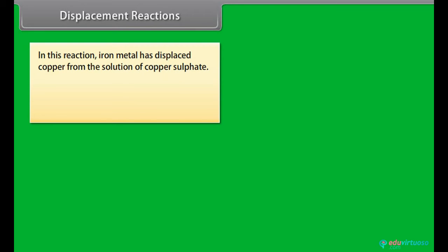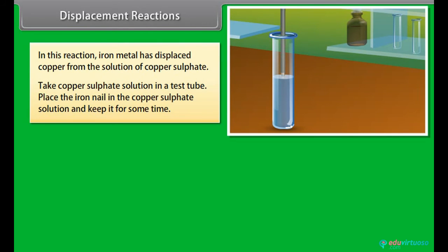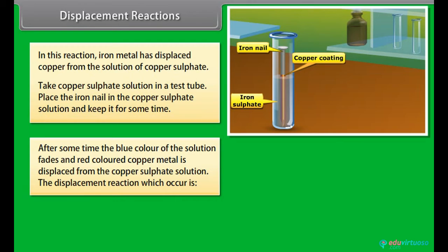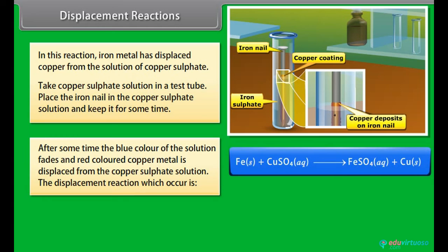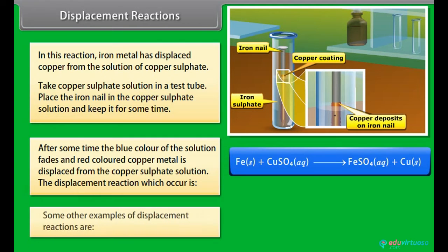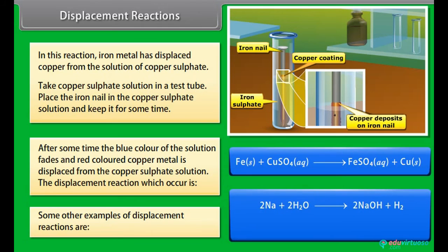In this reaction, iron metal has displaced copper from the solution of copper sulphate. Take copper sulphate solution in a test tube. Place the iron nail in the copper sulphate solution and keep it for some time. After some time, the blue colour of the solution fades and red coloured copper metal is displaced from the copper sulphate solution. The displacement reaction which occurs is Fe plus CuSO4 gives FeSO4 plus Cu. Some other examples of displacement reactions are: 2Na plus 2H2O gives 2NaOH plus H2; 2Al plus Fe2O3 gives Al2O3 plus 2Fe.